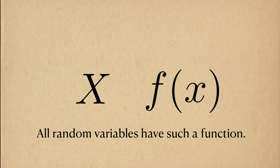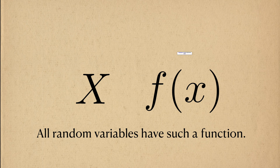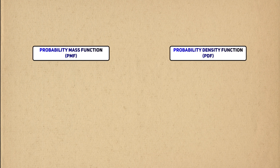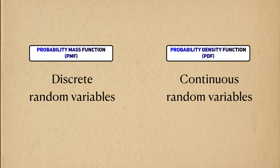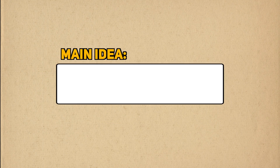The probability distribution can also be called the probability density function, or PDF, or probability mass function, PMF, depending on whether the values we observe are continuous or discrete. From here on out, I'll use the phrase 'probability distribution' and denote this function with the lowercase f.